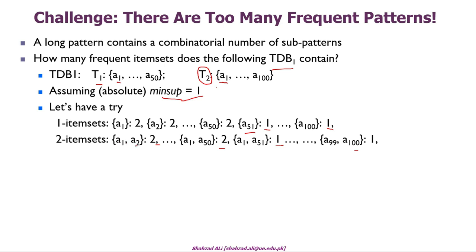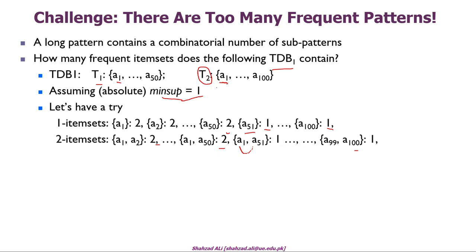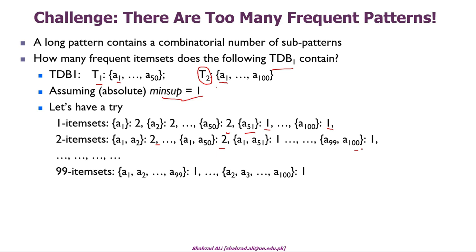For example, A1 and A2 occur in both transactions, so their support count is 2. Items A1 to A50 also occur in both transactions, giving support 2. But A51 paired with another item has support 1 because those items occur together only in T2. Similarly for pairs up to A99 and A100. This continues up through 99-item sets.